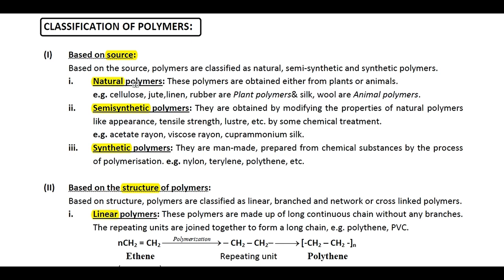Natural polymers are obtained from plants or animals. For example, cellulose obtained from cotton plant, jute, linen, and rubber obtained from the rubber plant are plant polymers. Silk obtained from silkworm and wool obtained from sheep are animal polymers. Collectively they are classified as natural polymers.